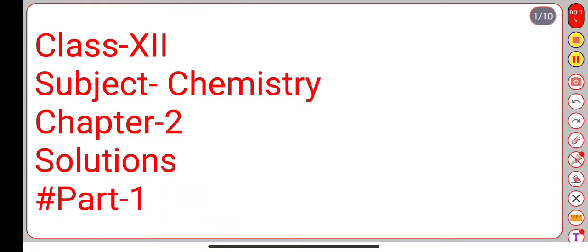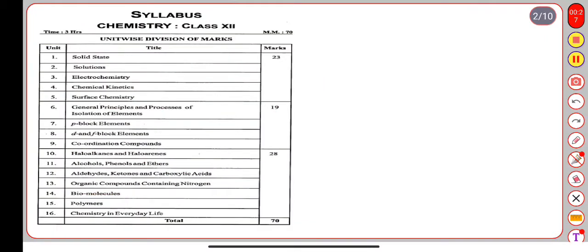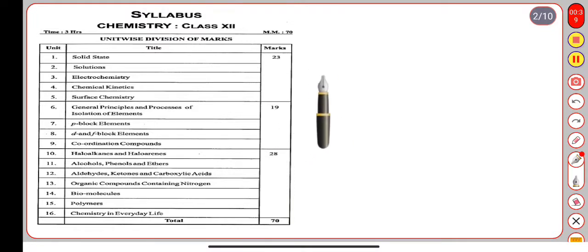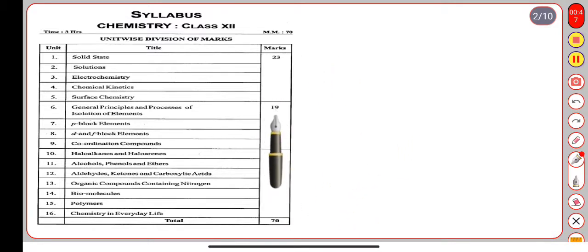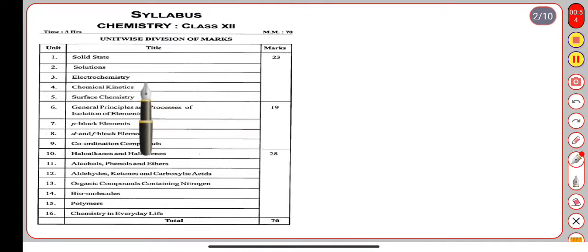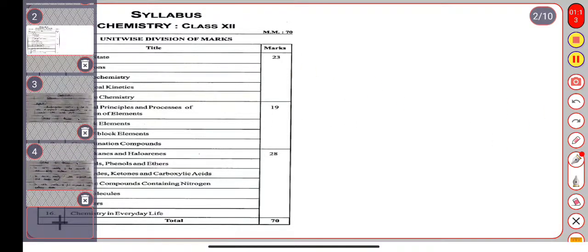The question is why chapter number 2 and not chapter 1? You can see the syllabus. There are 16 chapters total — the first part is physical chemistry and the last part is organic chemistry. Chapter 1, the solid state, is already objective type, so we will avoid it. Chapter number 2 is called Solutions, and we will start with that topic.